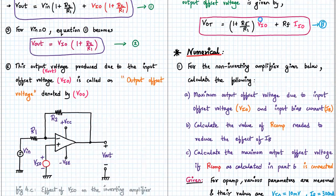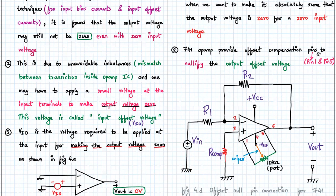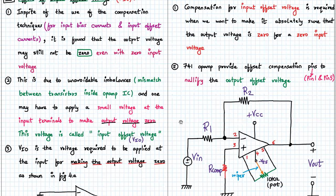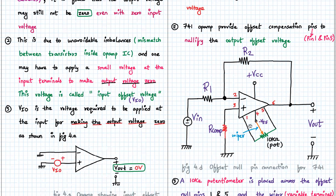So this output voltage produced due to the input offset voltage is called output offset voltage, denoted by VOO. So next we go for the compensation technique. The compensation technique for the input offset voltage is required when we want to make it absolutely so that the output voltage is 0 for a 0 input voltage. This is achieved externally by connecting a potentiometer between pin number 1 and 5, which are called offset null.